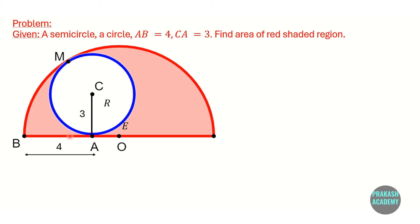The distance AB is given — this distance is equal to 4 units, and distance CA is given, that is the radius of the smaller circle, which is equal to 3 units. The point M is the point of contact where these two circles are internally touching each other. We have to find the area of the red shaded region.